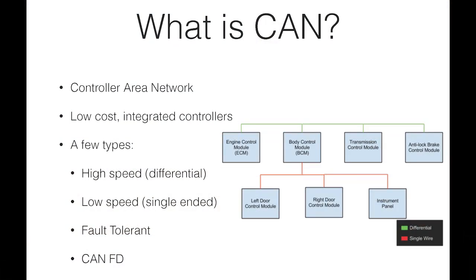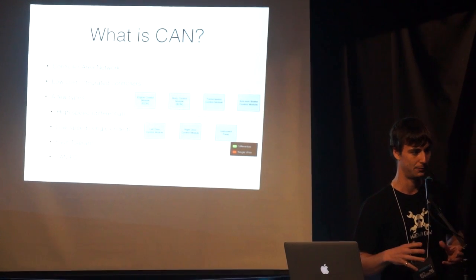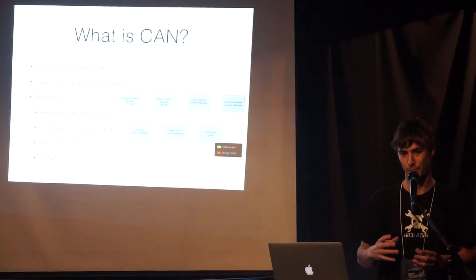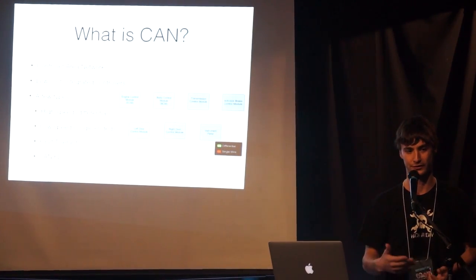So what are we talking about today? CAN — Controller Area Network. This is a way of networking really low cost microcontrollers together in a fairly reliable way. It's really popular in some applications. The whole idea is a low cost network, way cheaper than Ethernet, while still having some of the features of more advanced protocols.